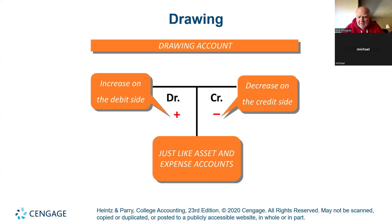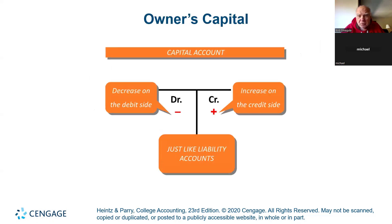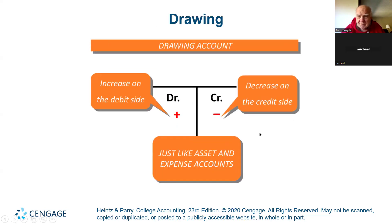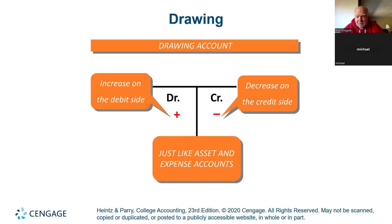Capital has a normal credit balance. Drawing has a normal debit balance, even though it's part of equity. The owner takes money out — we're going to credit cash because the money's gone, and we're going to reduce the net worth of the business. Don't confuse yourself by thinking that withdrawals like this are an expense. They're not an expense. They're a reduction in equity.